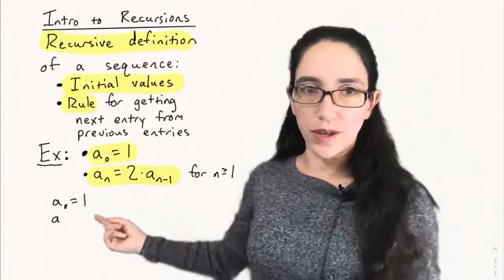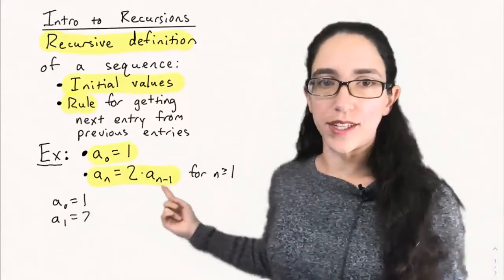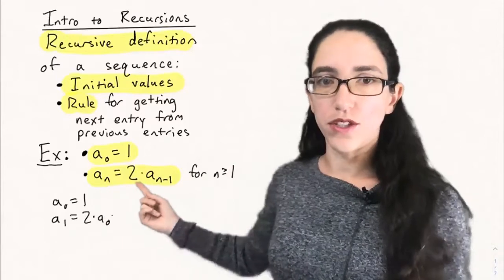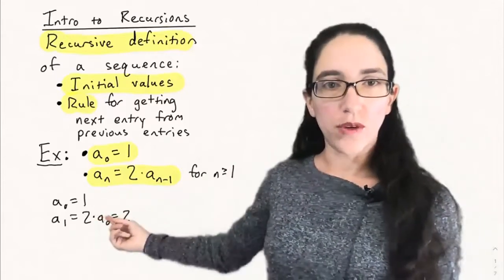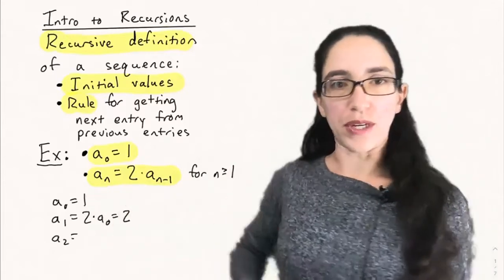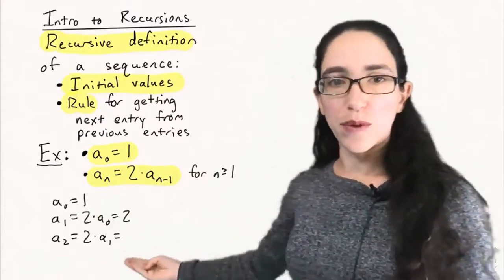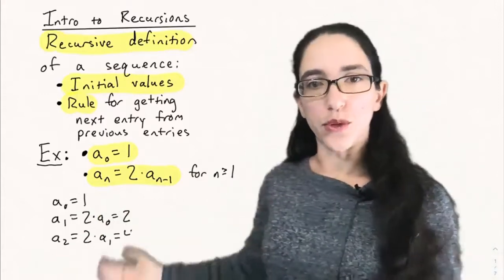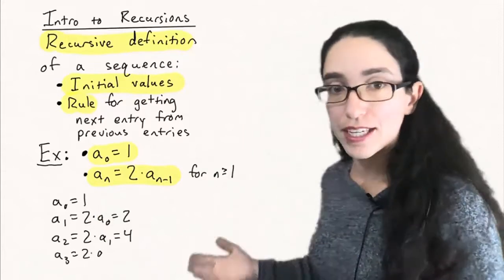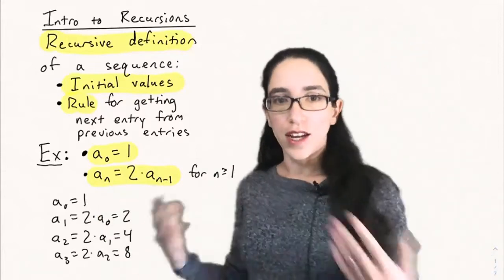So a₀ is 1, and then to get a₁, we plug n equals 1 into this formula, and we get that a₁ is 2 times a₀. But we know a₀ is 1, so we plug that in and get 2. Similarly, a₂ is 2 times a₁, so we get 2 times 2, which is 4. And a₃ is 2 times a₂, which is 8, and so on.